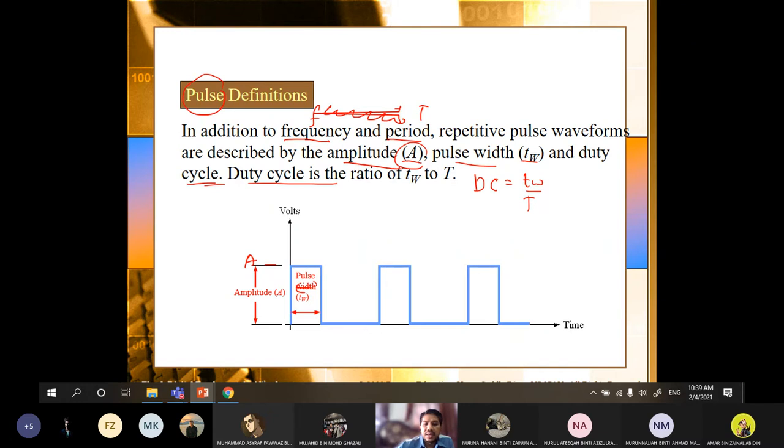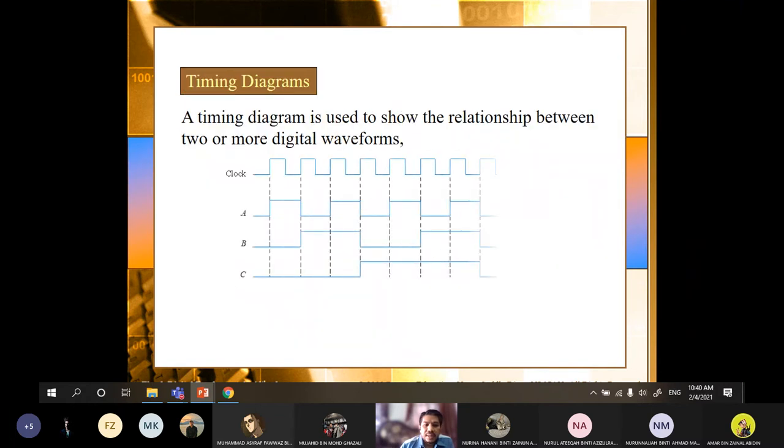And then we can also calculate what is the duty cycle for a given pulse. So for example, given this pulse, is it periodic or not periodic? This waveform. I think you answer yes. In your heart. It's periodic. And then the period is defined by one complete cycle. One complete cycle to here. So it's one cycle and then this is the second cycle and then this is the third cycle.